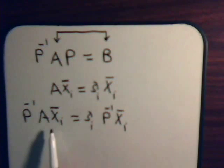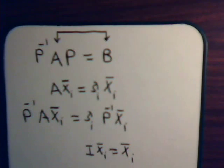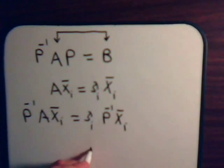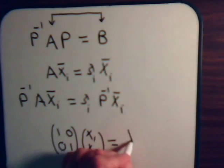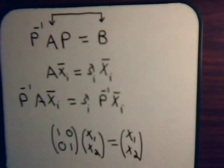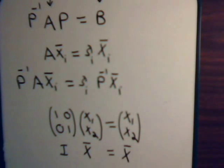For our eigenvector, or for any vector, we could multiply it by the identity matrix and still have that same vector. For example, suppose we had a vector with two components x1 and x2. Multiplying by the identity matrix gives us x1 and x2. So the identity matrix times a vector just gives us that vector.